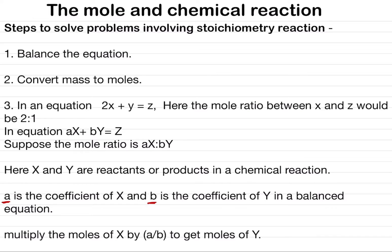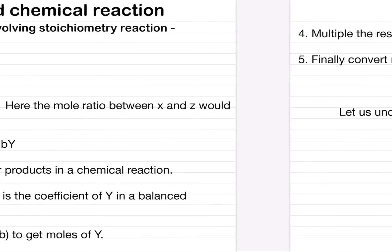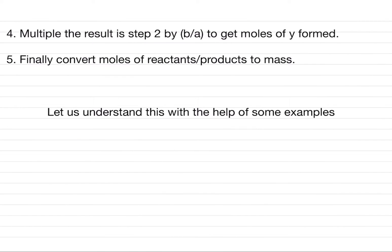Remember: multiply the moles of X by b divided by a to get moles of Y. This is step three. Step four: multiply the result from step two by b divided by a to get the moles of Y formed. Finally, step five: convert moles of reactants or products to mass.